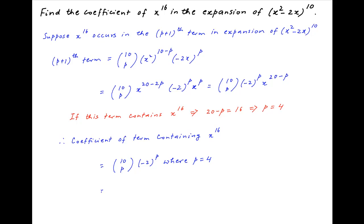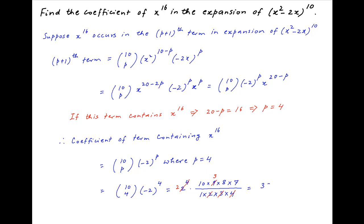This is equal to 10 choose 4, multiplied by (minus 2) raised to the power 4, which equals 2⁴ times (10 × 9 × 8 × 7) divided by (1 × 2 × 3 × 4), and this simplifies to 3360, which is the required answer.